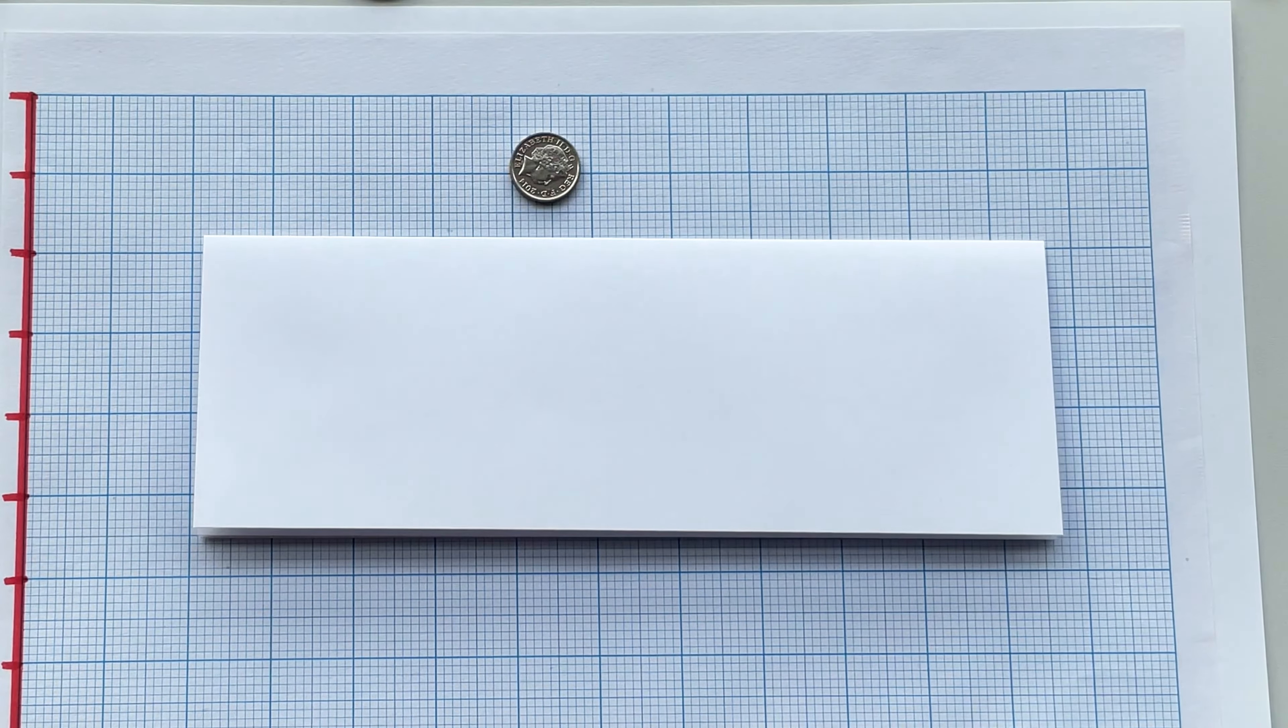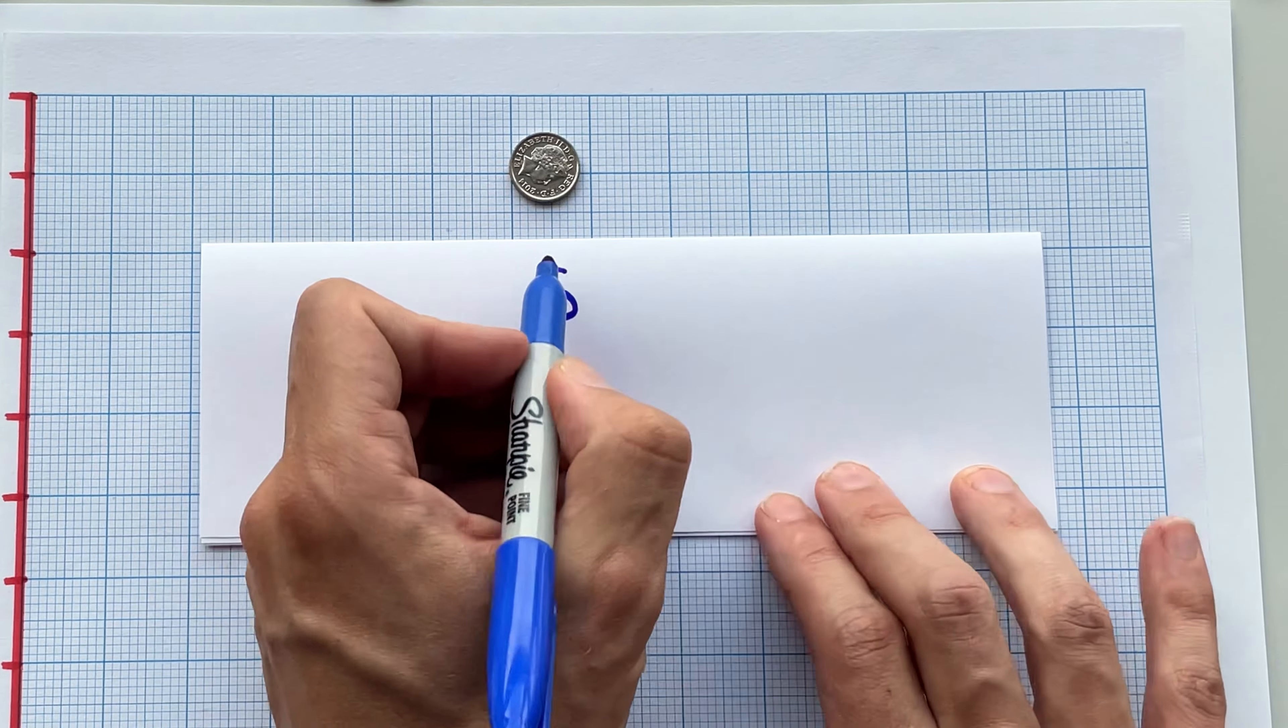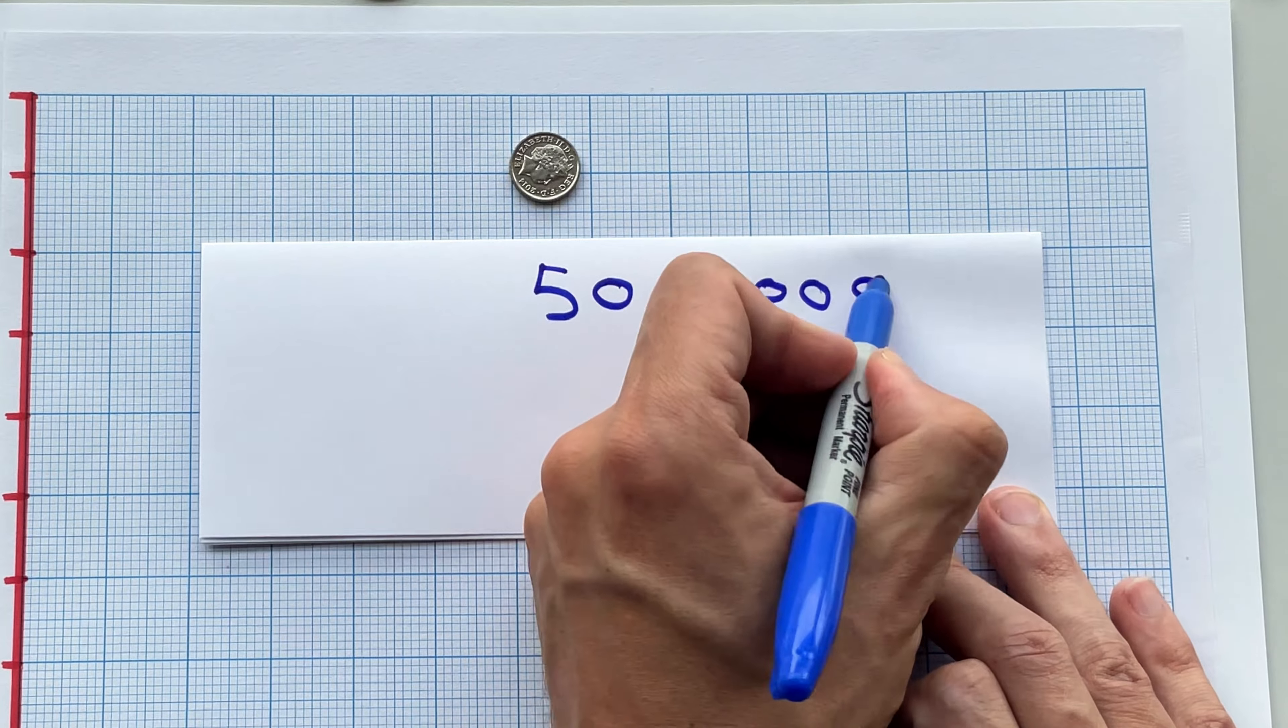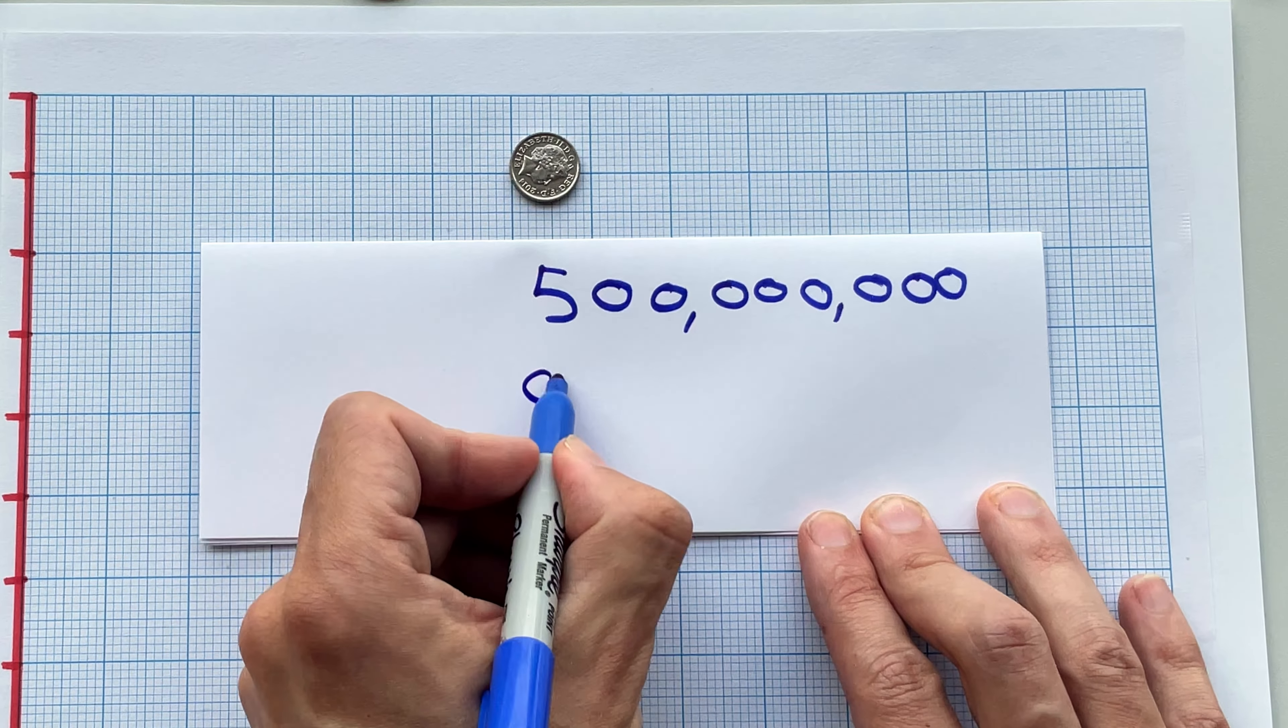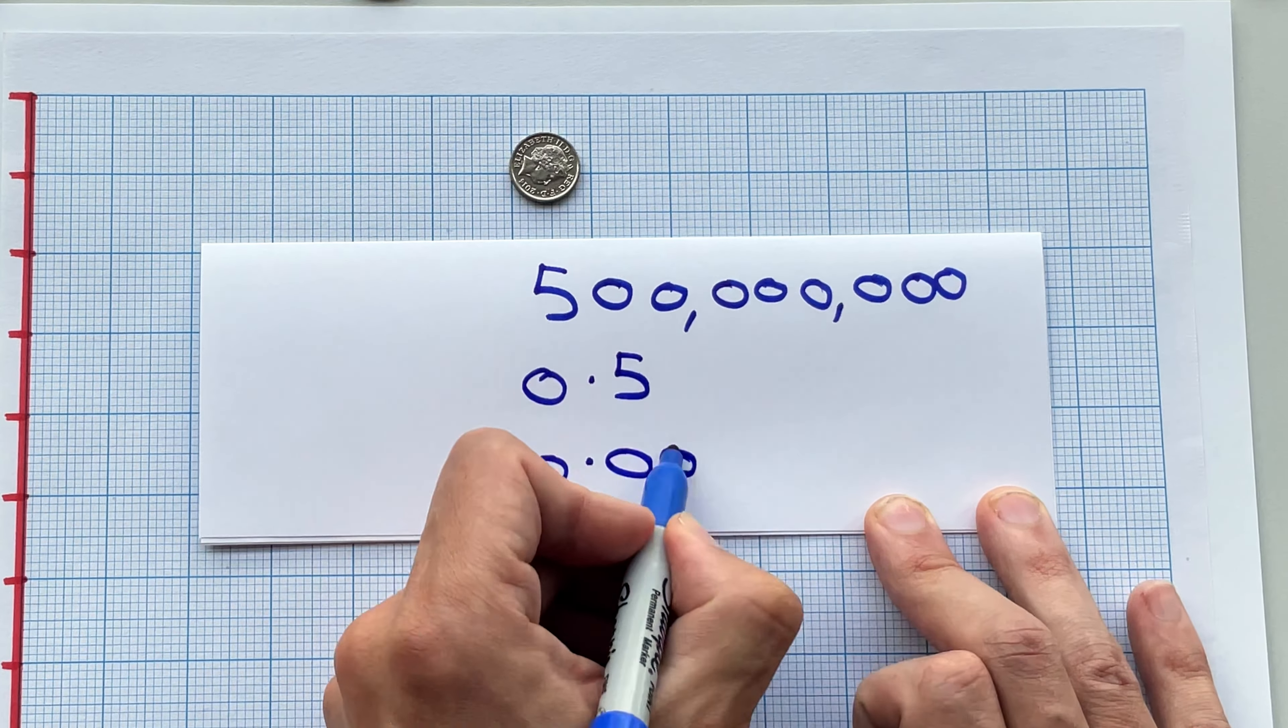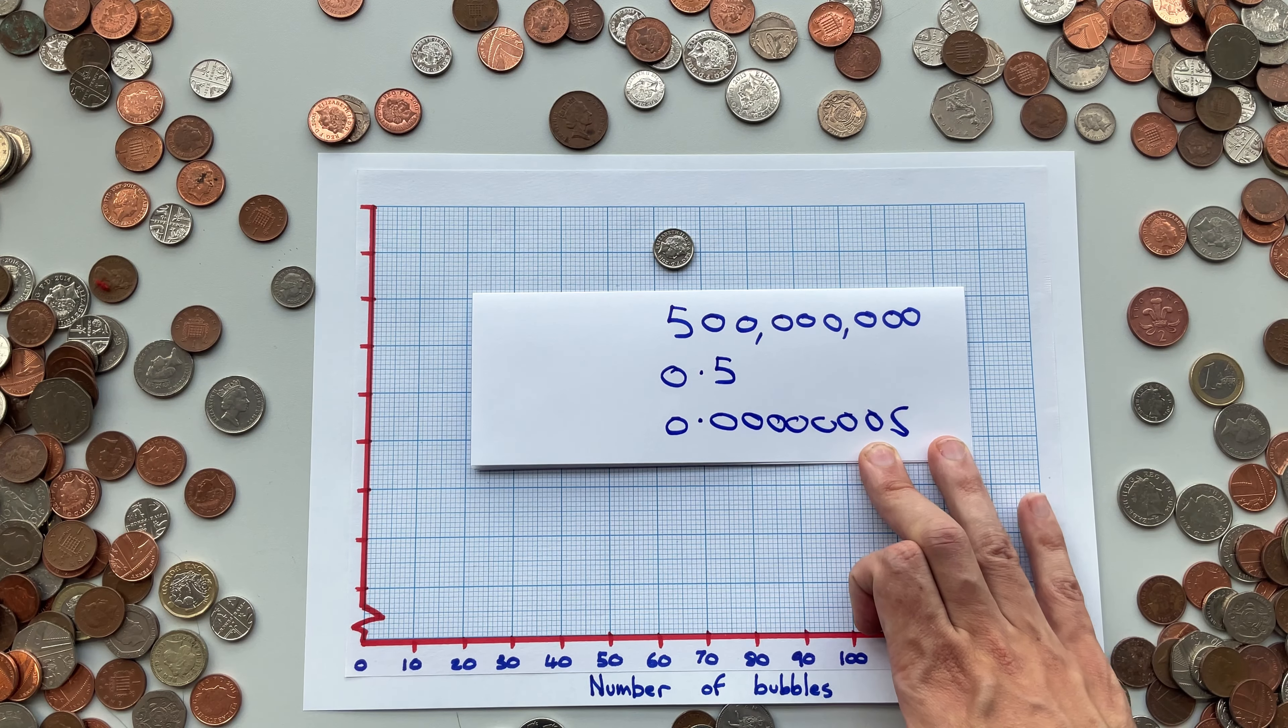The second trick is we can put as many zeros as we like before or after the number from our coin. So if we started with a five pence piece, we can go up in fives, fifties, five hundred, five hundred thousands, five hundred millions. Or we can put the zeros before and go up in 0.5s or even 0.0000000005s. As long as it's just the number from a coin and zeros.